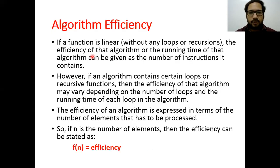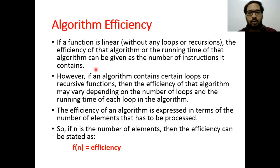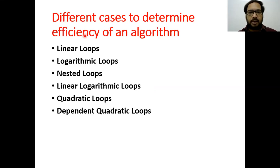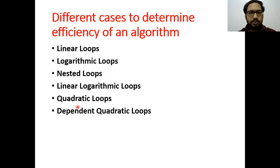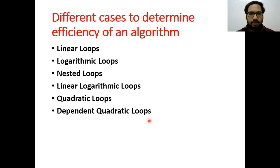Focusing again on the first point: the running time of a linear algorithm can be given as the number of instructions it contains. But for algorithms that contain loops or recursion, different cases are available to determine efficiency. We can have linear loops, logarithmic loops, and nested loops such as linear logarithmic loops, quadratic loops, and dependent quadratic loops. Based on these six points, I will explain how to identify algorithm efficiency.